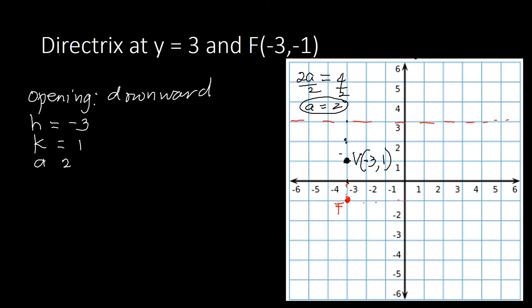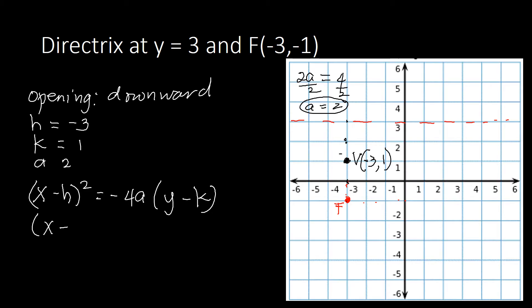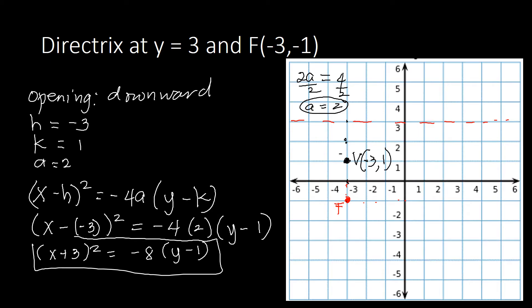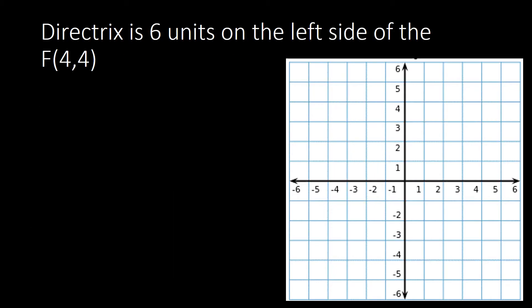Since the parabola opens downward, we use the standard form: (x minus h) squared equals negative 4a times (y minus k). Substituting our values, we get (x minus negative 3) squared equals negative 4 times 2 times (y minus 1), which simplifies to (x plus 3) squared equals negative 8 times (y minus 1). This is our standard equation of the parabola.